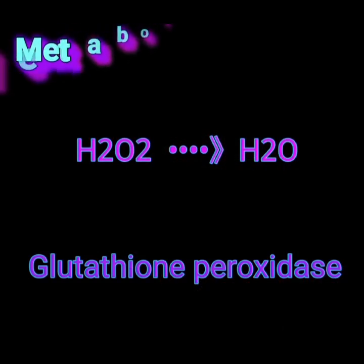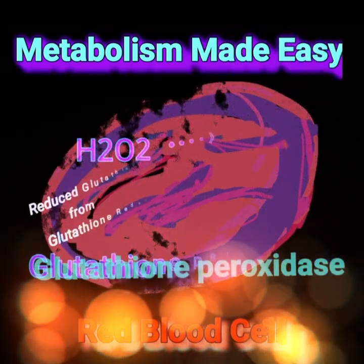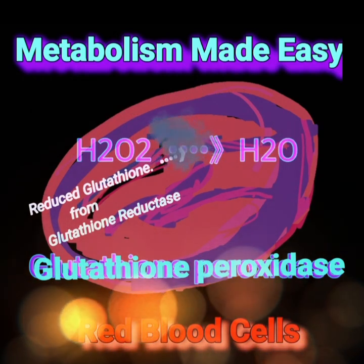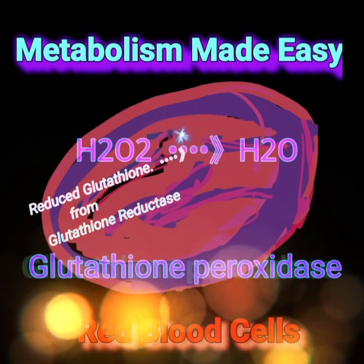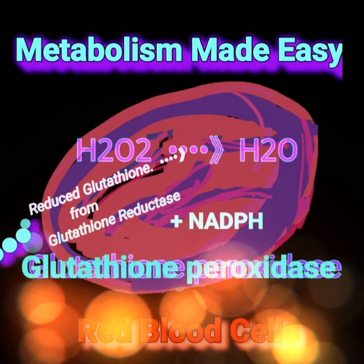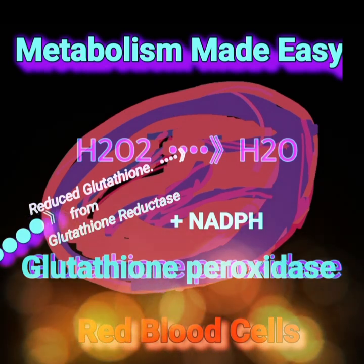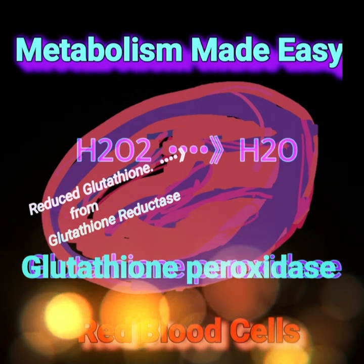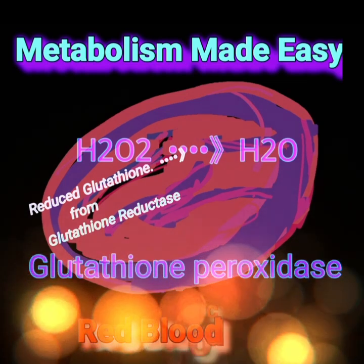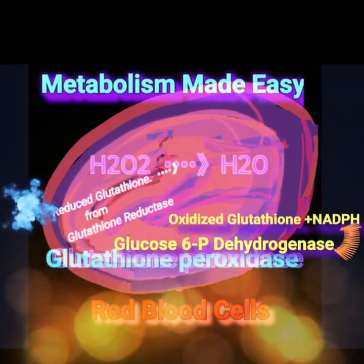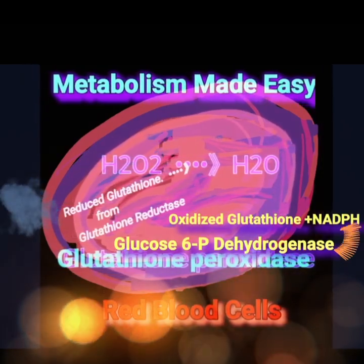Detoxification of hydrogen peroxide in red blood cells is an important protective mechanism to prevent oxidative damage. The regeneration of glutathione by glutathione reductase and NADPH ensures that glutathione is constantly available as a coenzyme for glutathione peroxidase, which removes the toxic effects of hydrogen peroxide on red blood cells. The NADPH needed for reduction of glutathione is provided by glucose 6-phosphate dehydrogenase.